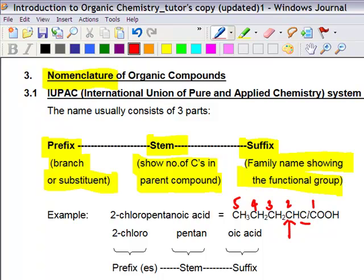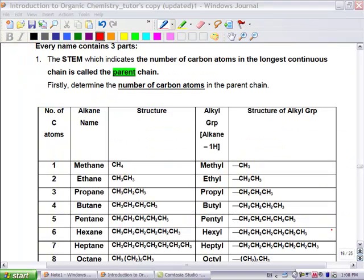Hence the naming is 2-chloropentanoic acid. At this point of time, do not be alarmed if you do not understand how the naming works. It will get better as the lecture proceeds. Every name consists of three parts. The stem indicates the number of carbons in the longest continuous chain, called the parent chain.